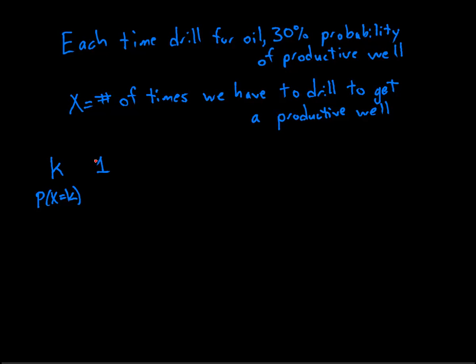We'll start off with one. What's the probability that X is one? That would be the case where we just have to drill one time before we get a productive well. Well that would mean that our first drilling is indeed a productive well. So that happens with probability 0.3.